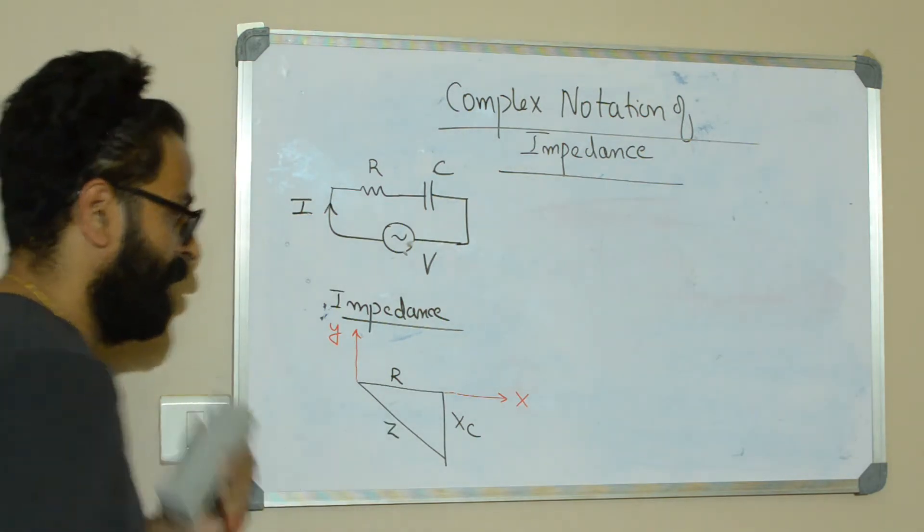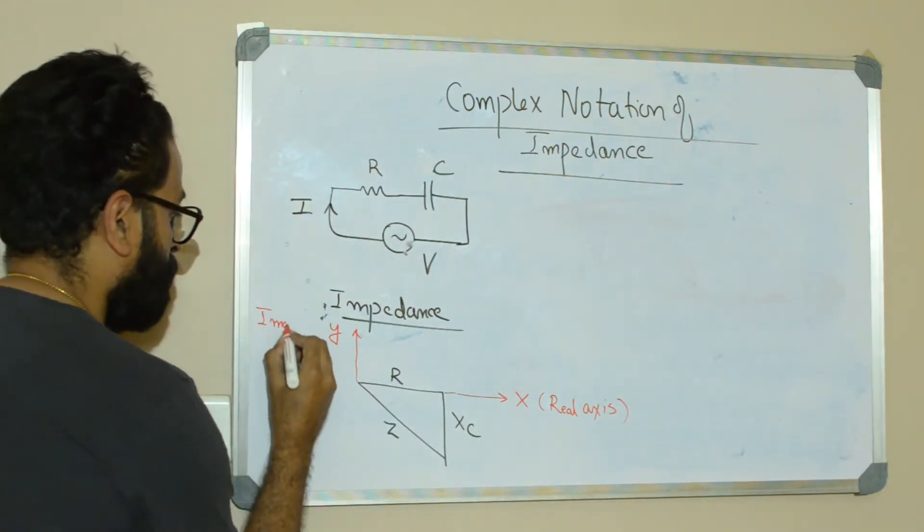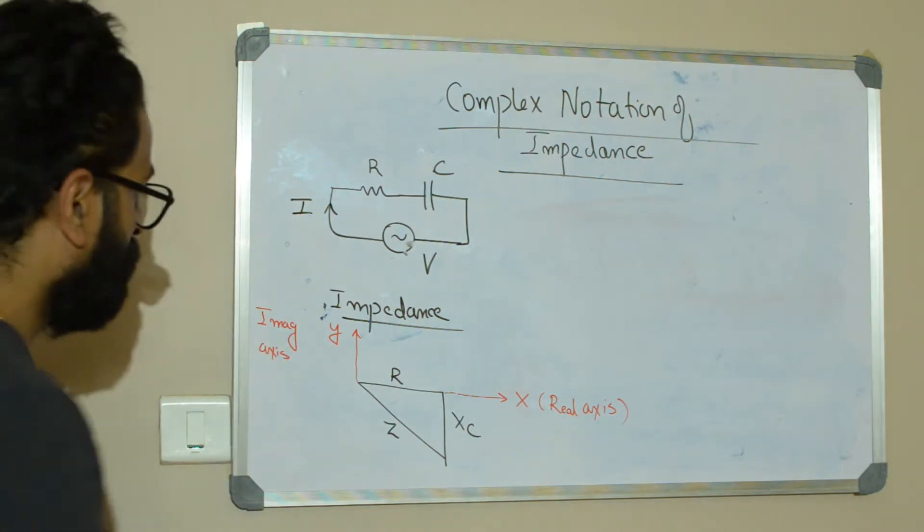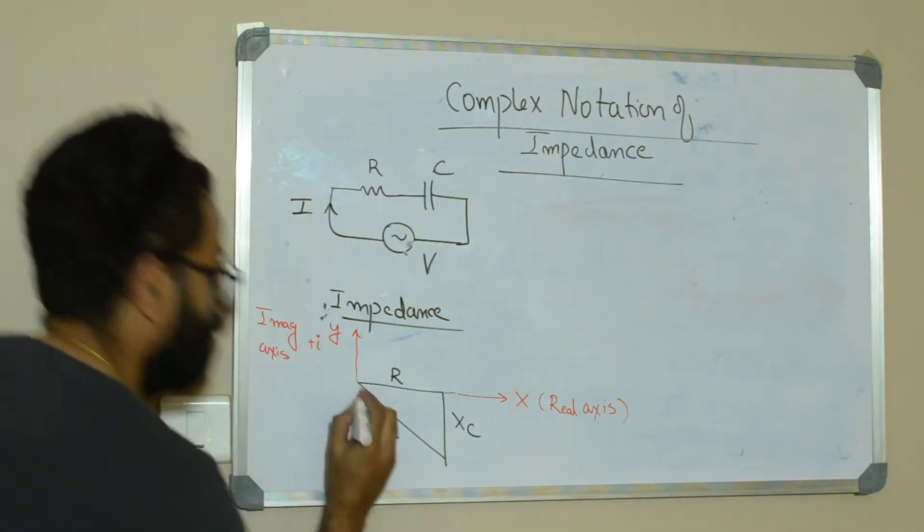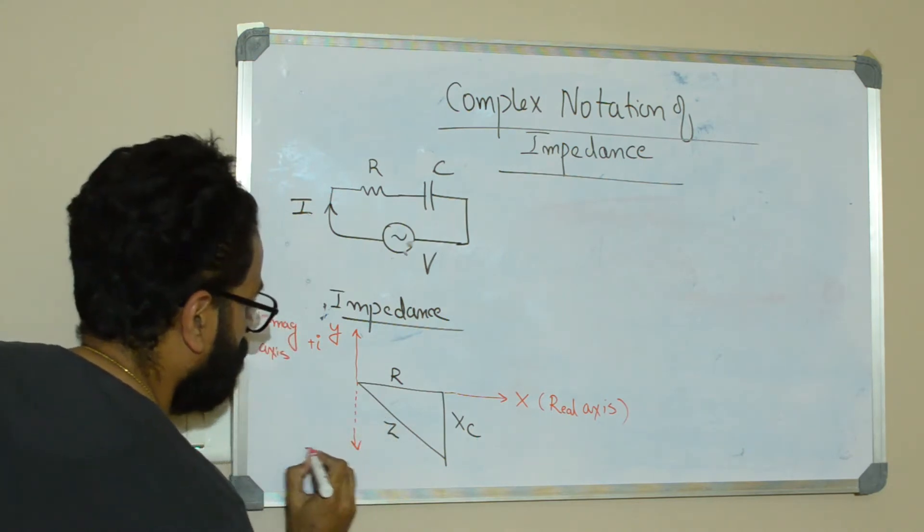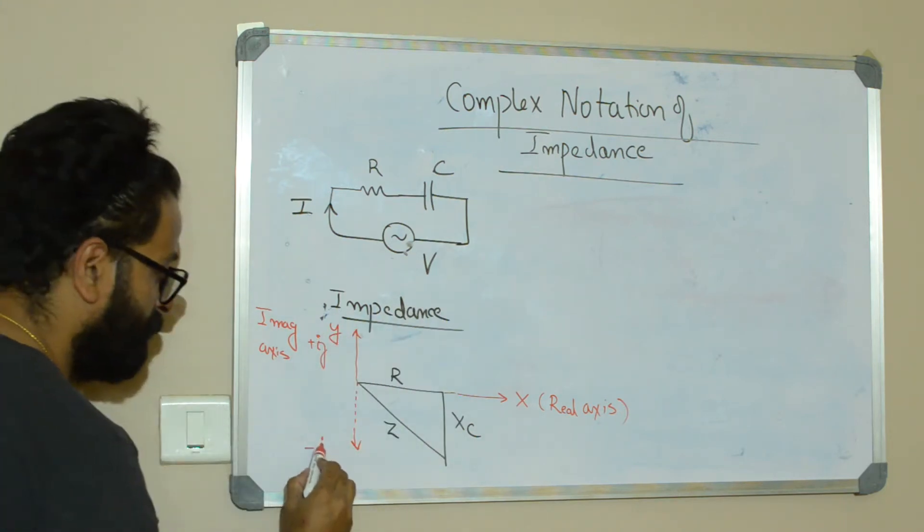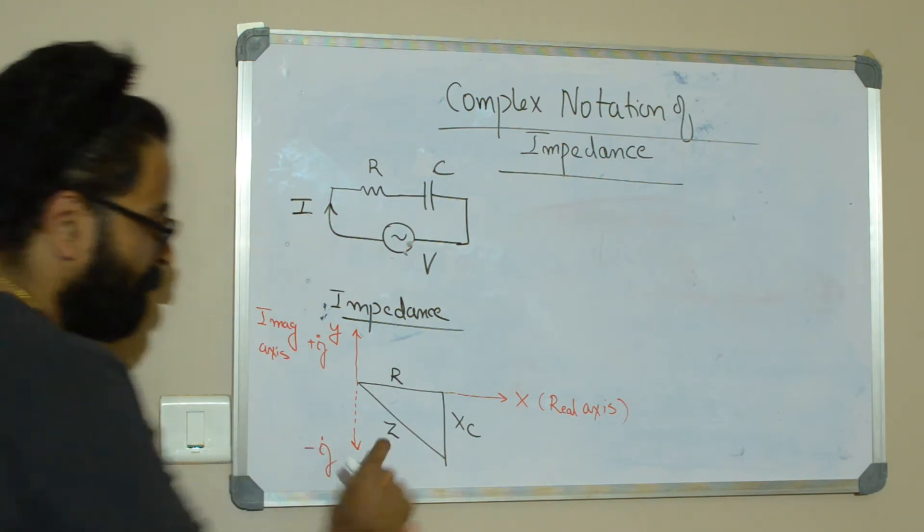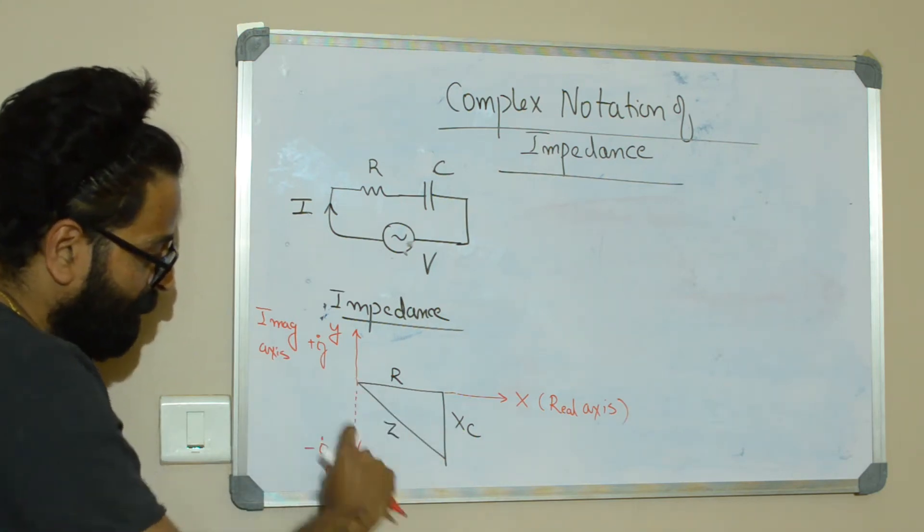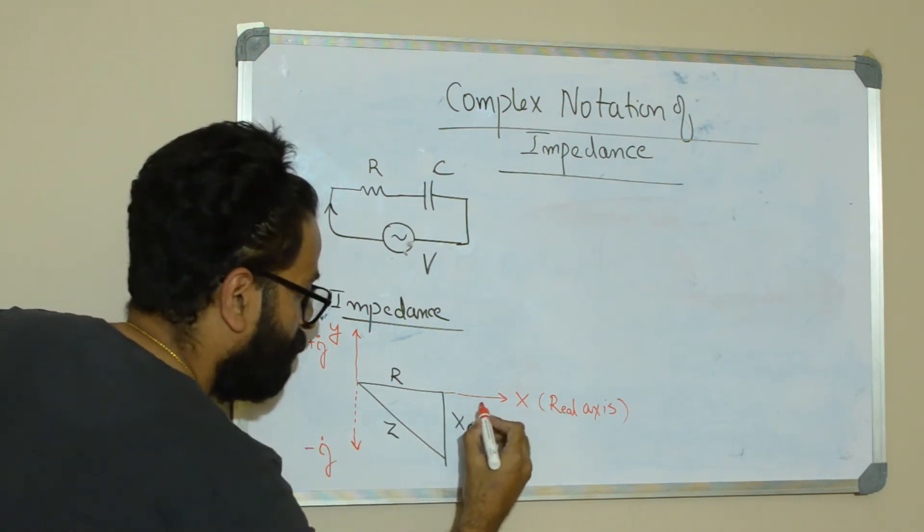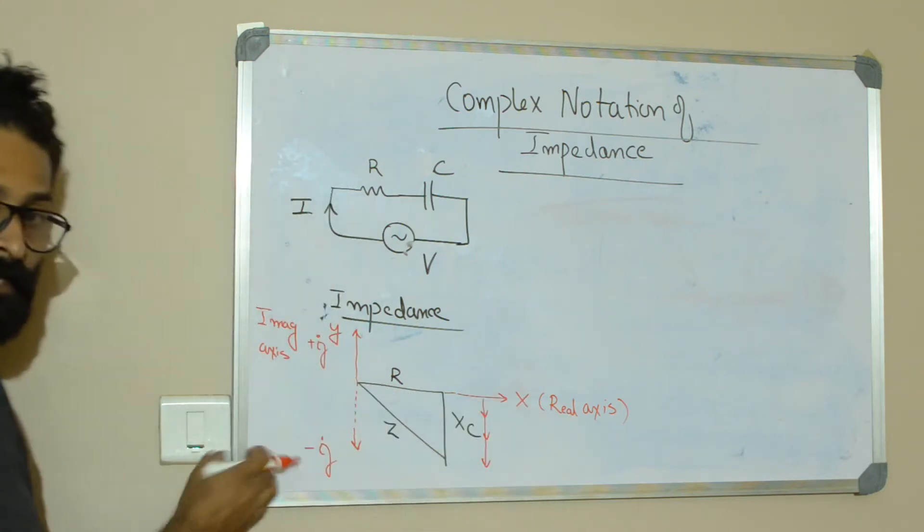So now let us convert into a complex plane. X-axis is your real axis and y-axis is your imaginary axis. So positive y is your plus j axis and negative y is your minus j axis. For our discussion, let us consider: the capacitive reactance Xc is projected along negative j axis. Are you following? The capacitive reactance Xc is projected along the negative j axis.